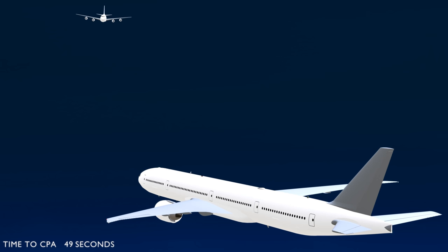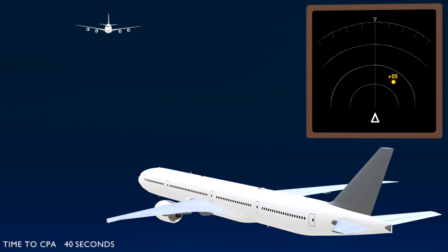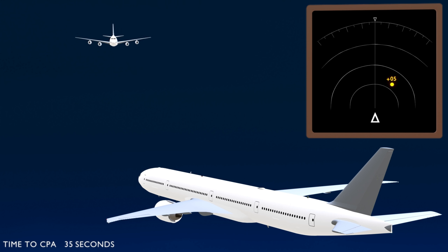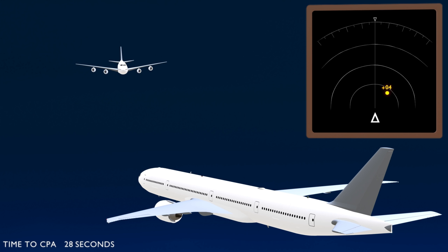If both aircraft continue on the same flight path, with 45 seconds to go, the TCAS issues a traffic advisory — 'Traffic, traffic.' The traffic is displayed on the navigation display; an amber dot indicates the aircraft, and 'plus 05' indicates the traffic is 500 feet above. In a traffic advisory, there are no maneuvering instructions — it just draws the attention of the flight crew to an incoming aircraft.